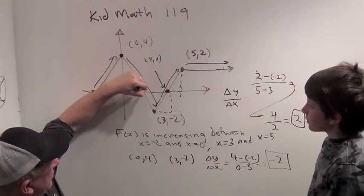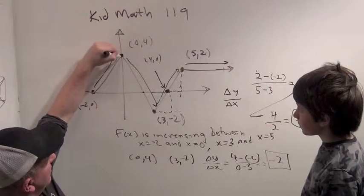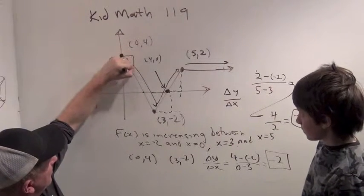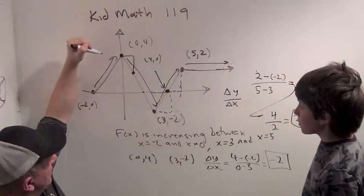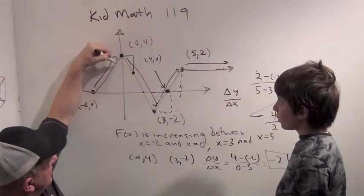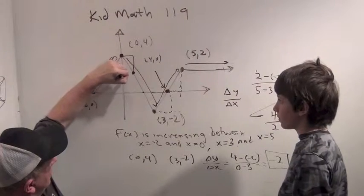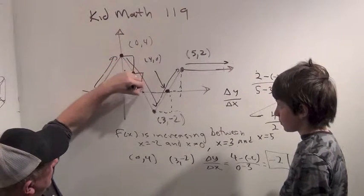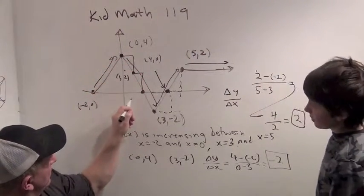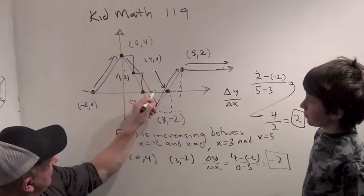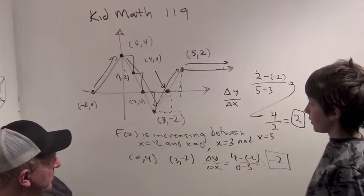So actually, I think we probably learned what this point was, too. Let's see. We go over 1, down 2. So what point are we at here? So we're at 1 comma 2. 1 comma 2. So we go over 1, down 2. And we're at 2 comma 0. 2 comma 0. And we go over 1, down 2. And we're at 3 minus 2. Alright.